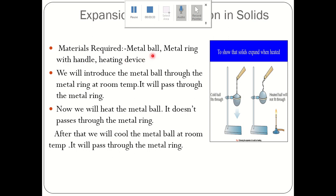For this experiment, the materials required are a metal ball, a metal ring with handle, and a heating device. We will introduce the metal ball through the metal ring at room temperature. We will observe that it passes through the metal ring. Now, we will heat the metal ball. When heated, the size of the metal ball increases — it expands — and when we try to pass it through the metal ring again, it will not pass through.